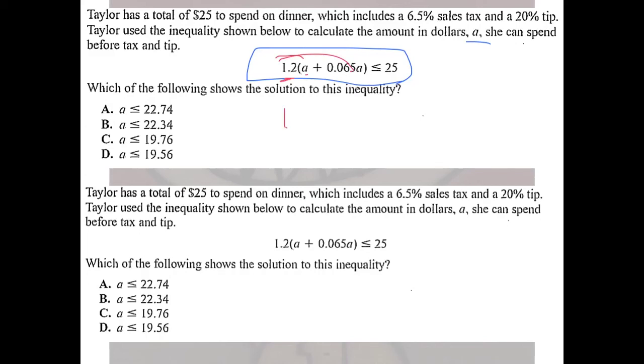Although we can do that I do notice that these are like terms we can combine those that's interesting but let's go ahead and just distribute it won't hurt. So this is 1.2A plus if I multiply that I get 0.078A this is less than or equal to 25 and if I combine those I get 1.278A less than or equal to 25. To get that by itself I'm going to just divide by 1.278. So if we divide that my best answer choice looks like answer choice D.